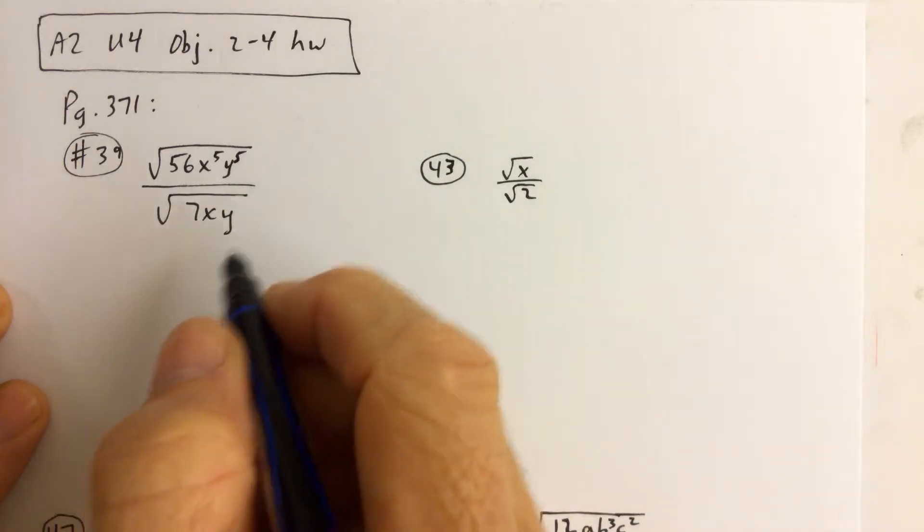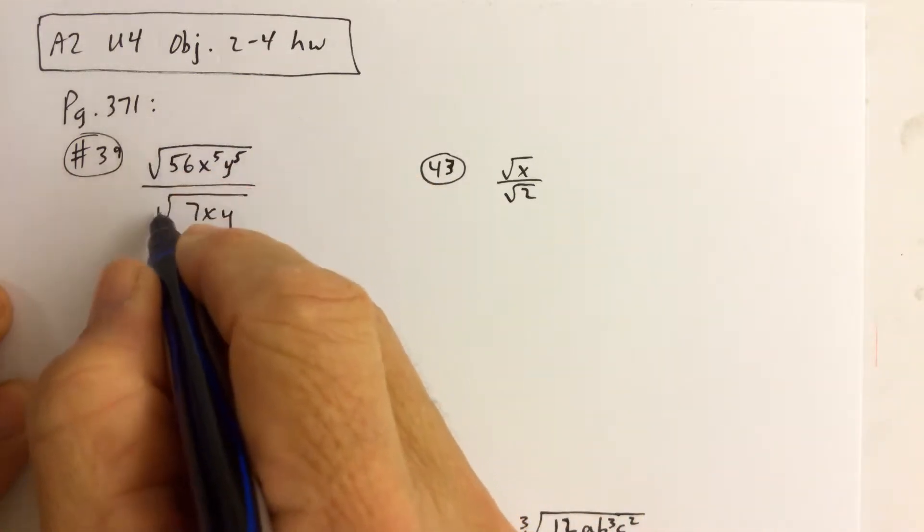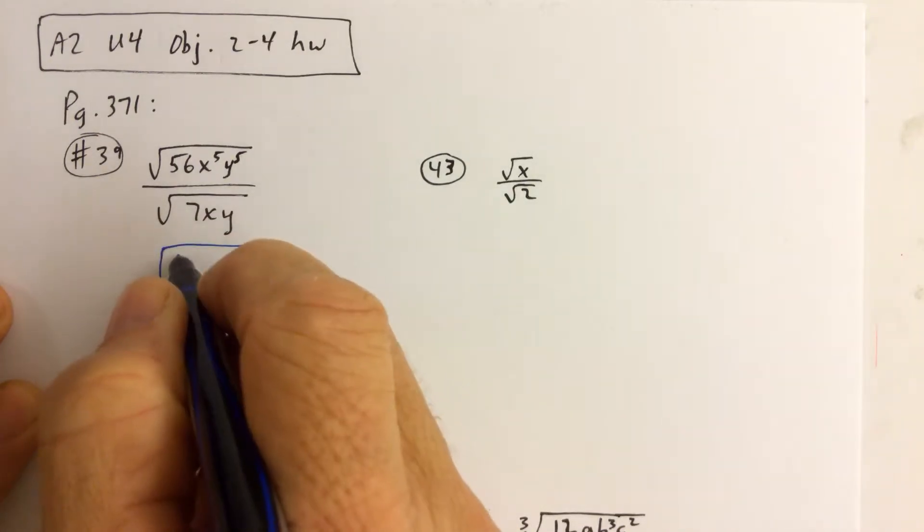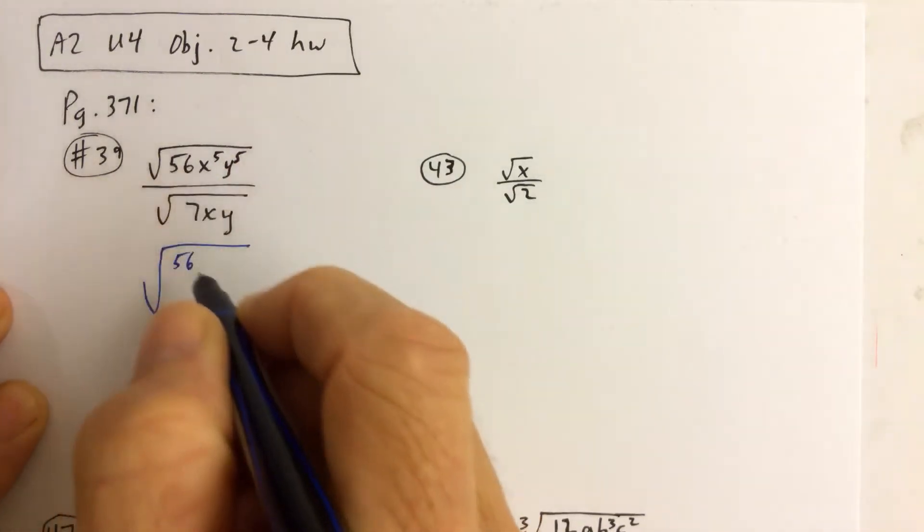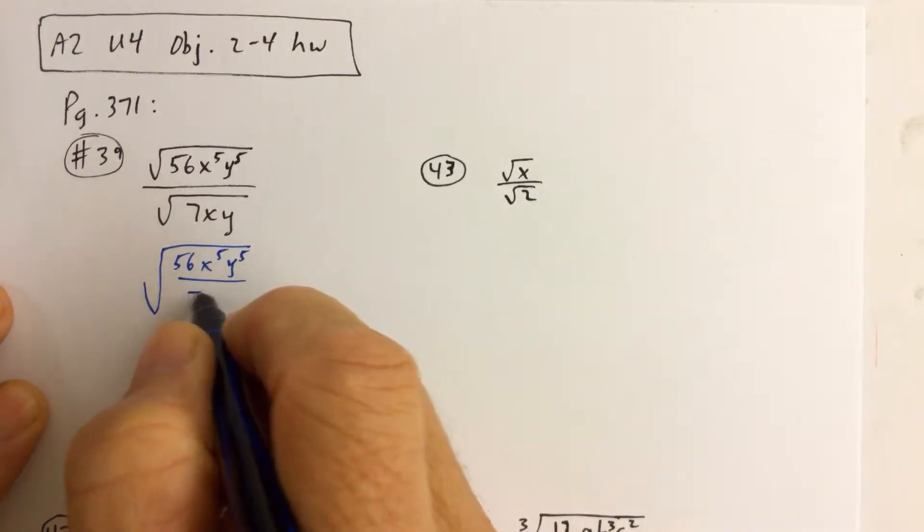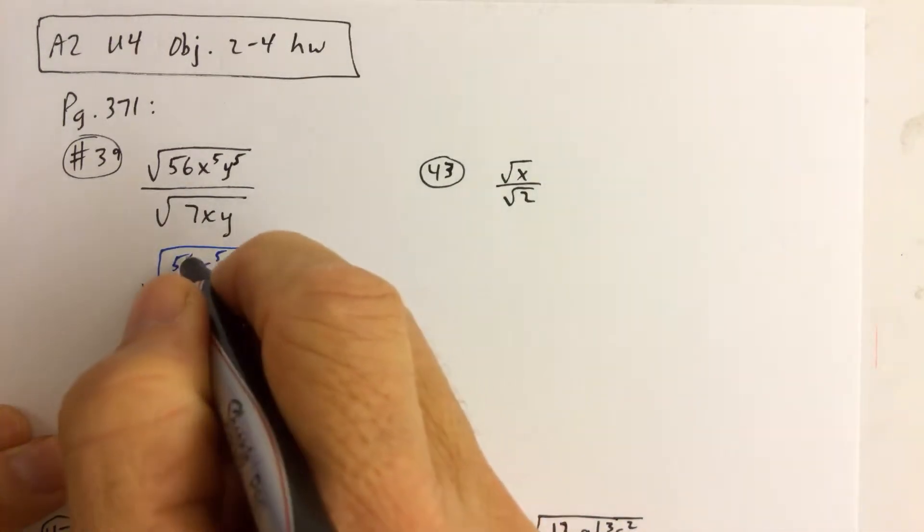The division stuff. So what we talked about in class is when you see the same root in the numerator and denominator, you can go ahead and rewrite everything that's under both of those under one big square root. And then once you do that, then you can go ahead and reduce the fraction.